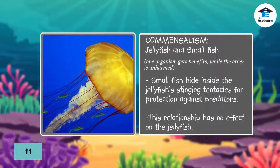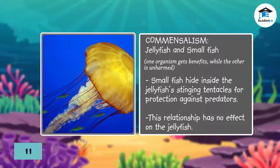The jellyfish and small fish relationship is an example of commensalism. Small fish can hide inside the jellyfish's stinging tentacles if the sting does not affect them. The stinging tentacles protect the hiding fish from larger predators. This relationship has no effect on the jellyfish.